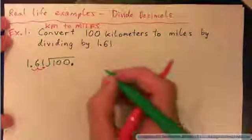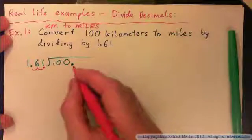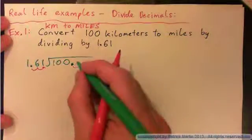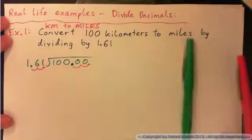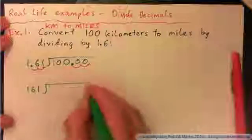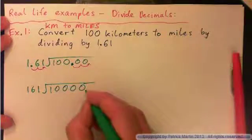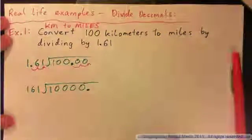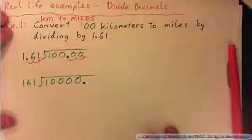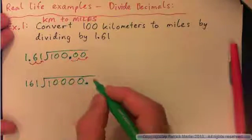Where's the decimal point for the number 100? It's right here, and you've got to move that 1, 2 spaces as well. In which case you've got to plug in some zeros there. So we're going to get 161 into 10000, with the decimal point here.